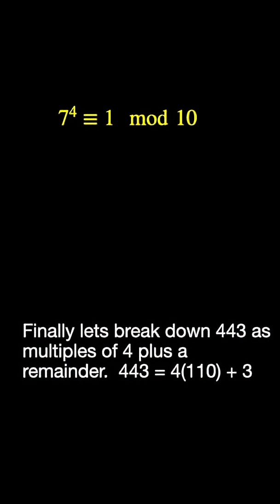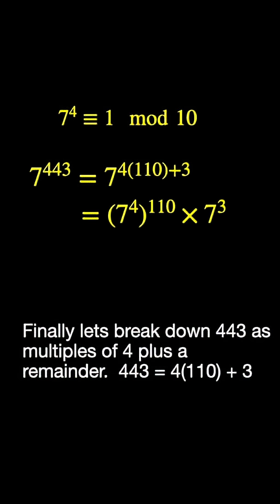Let's break down 443 as multiples of 4 plus a remainder. 443 is 4 times 110 plus 3. So we can write 7 to the 443 as 7 to the 4 times 110 plus 3. And the laws of exponents allow us to write it in this manner.